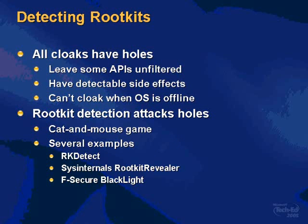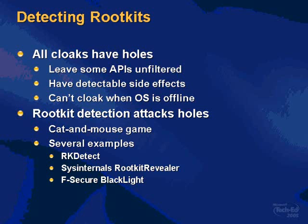So how do you detect these things? All rootkits have some holes — they all leave some APIs unfiltered and have detectable side effects, even in-memory hiding. If you know what to look for and know to look for anomalies, you can find these differences. Another key point is that rootkits can't cloak when the OS is offline, so once the OS is offline the cloak is not active and you can see the raw file system and raw data structures. Rootkit detection is a very immature area, evolving quickly, but this game has just started — it's a cat-and-mouse game.